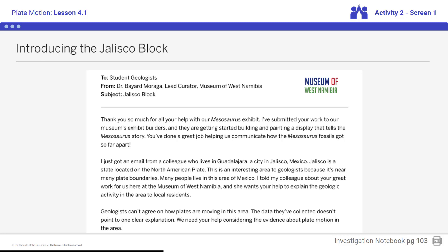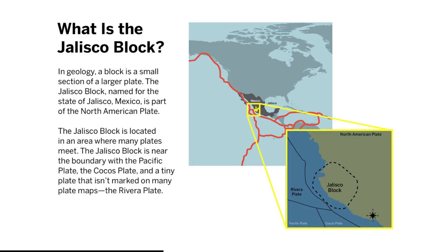Geologists can't agree on how plates are moving in this area. The data they've collected doesn't point to one clear explanation. We need your help considering the evidence about plate motion in the area. Scientists are particularly interested in this area because there are so many plate boundaries there. The Jalisco block is a small section of the North American Plate. Based on the evidence you'll consider in this chapter, you'll learn why scientists do not agree on what is happening with the movement of the Jalisco block.